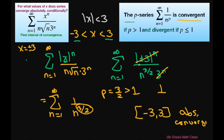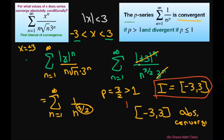Therefore our series is absolutely convergent on the interval negative 3 to 3. The interval of convergence is also negative 3 to 3, and there is no conditional convergence. Thank you, have a nice day. Bye bye.